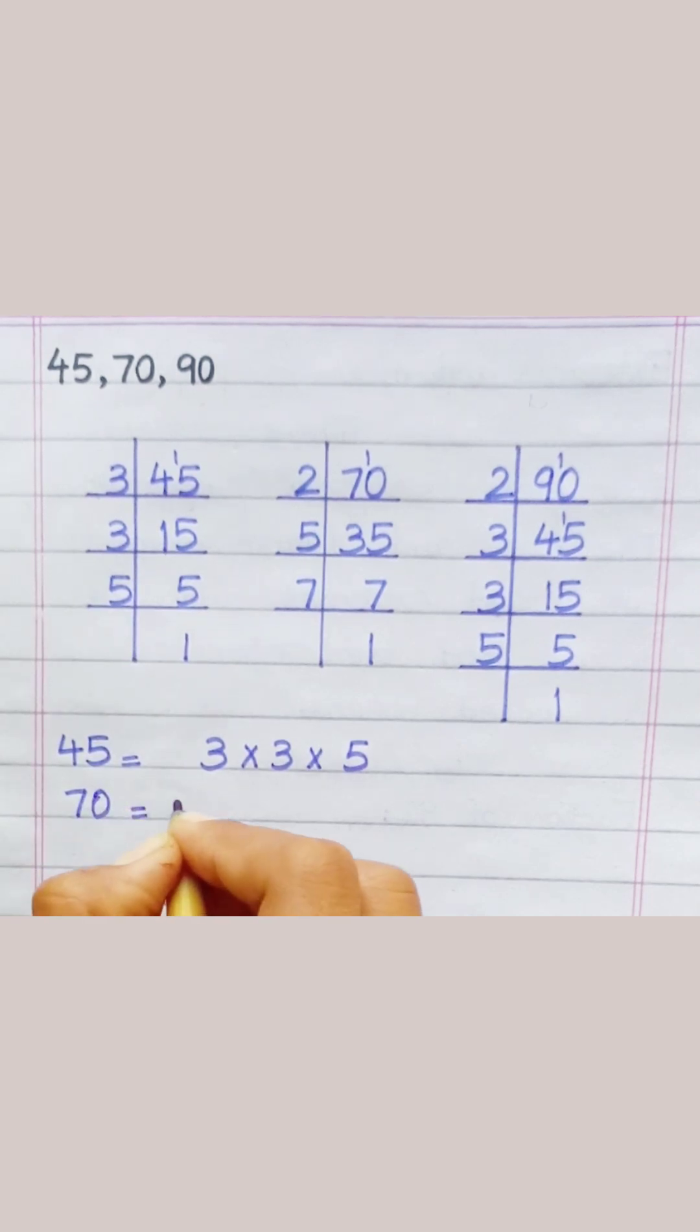Seventy equals two multiply five multiply seven.